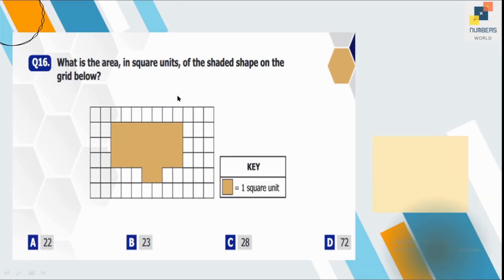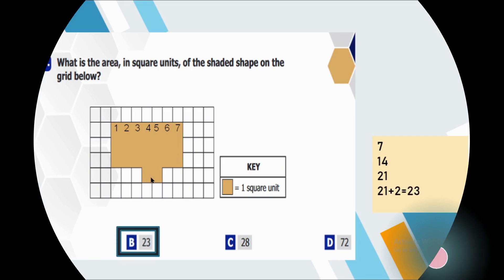Question number 16. What is the area in square units of the shaded shape on the grid below? To calculate the area, we will not apply formula over here. We will simply count the number of squares because it's a grid and it's a compound shape. So count the number of squares in it. So if I count the number of squares in the first row, there are seven and the same number is repeated in the second and third row. So we will simply add 7. 7 plus 7 is 14. 14 plus 7 is 21 and there are two extras so 21 plus 2 is 23. So B is our correct option.